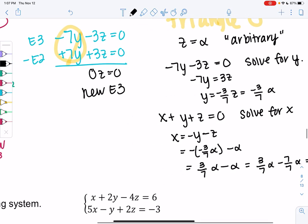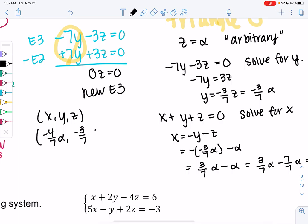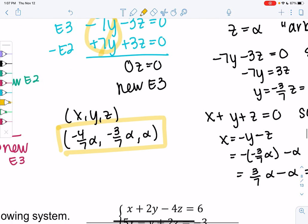My solution is x, y, z: negative 4/7 alpha, negative 3/7 times alpha, and then alpha. This is what the arbitrary solutions look like. There are infinite solutions, but they have to fit this pattern. Zero, zero, zero is a solution, but not the only solution.